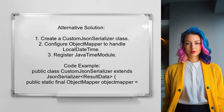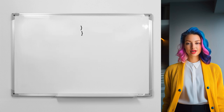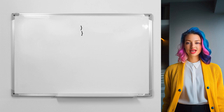Another solution was provided by a user who faced a similar issue. They created a custom JSerializer class to handle the serialization of LocalDateTime objects. Initially their serializer configured the ObjectMapper to write dates as timestamps, but after encountering errors with a Spring Boot update, they modified the serializer to include the JavaTimeModule, which allows for proper handling of LocalDateTime.